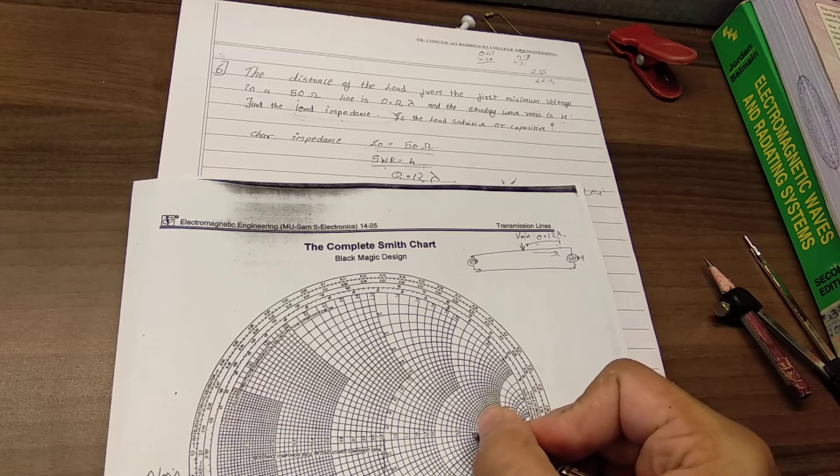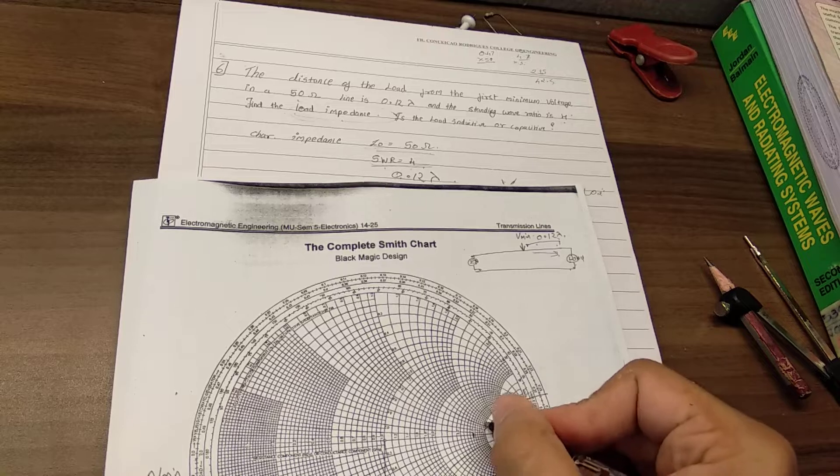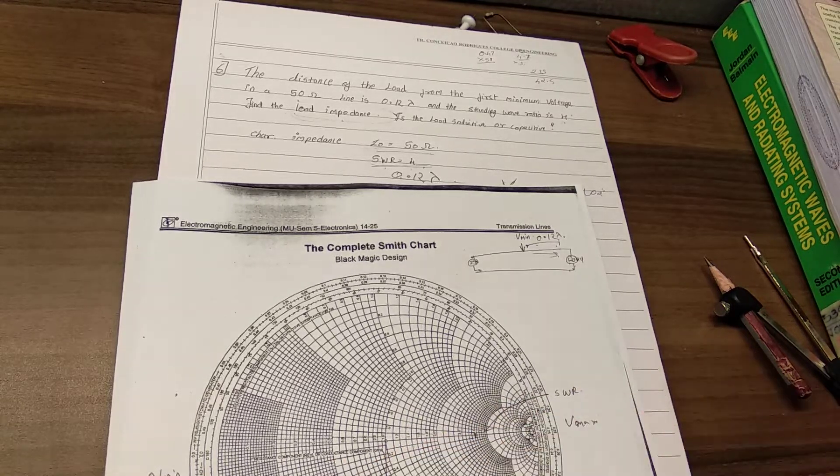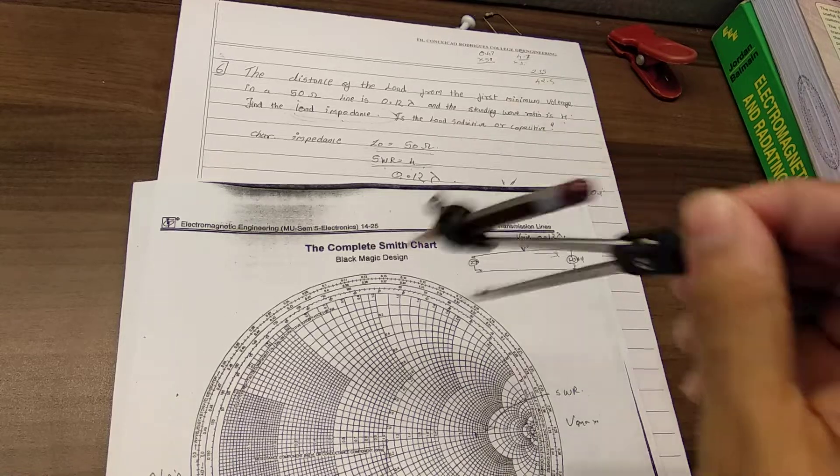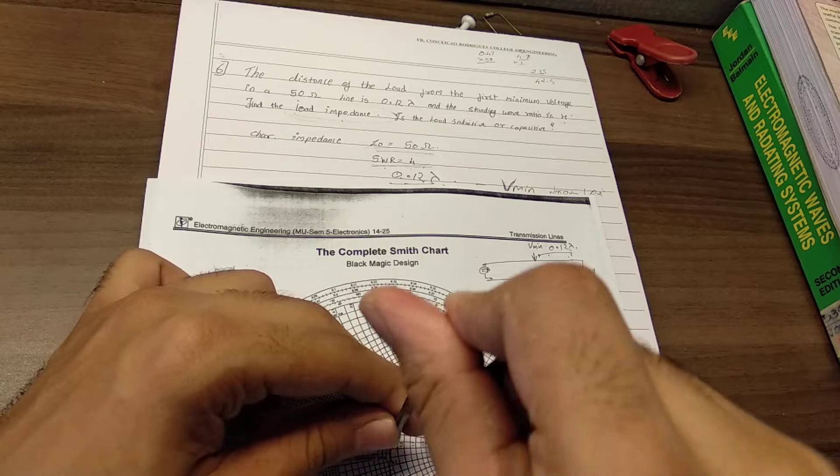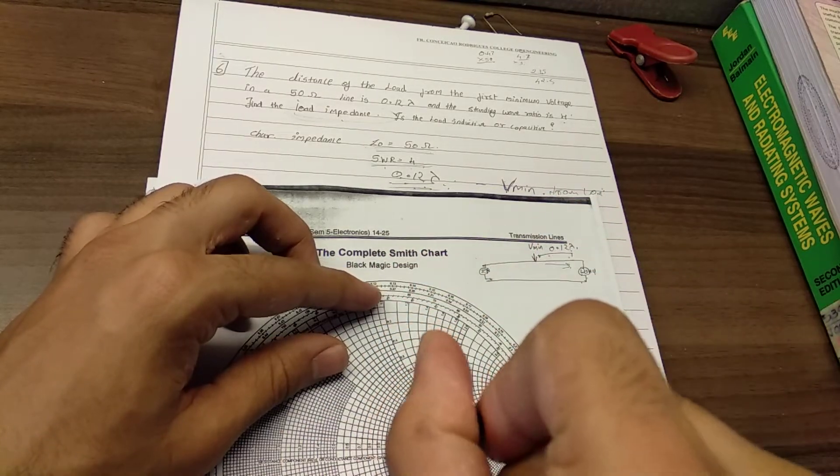So now this is my 4.0. So this is where my standing wave ratio or constant SWR is located. And all I have to do is draw a circle from the center through this point. And if I just draw it like this, I've drawn this.